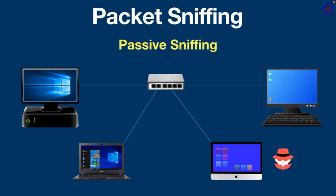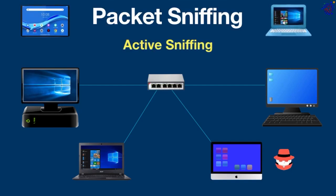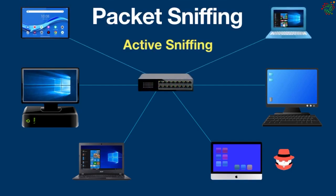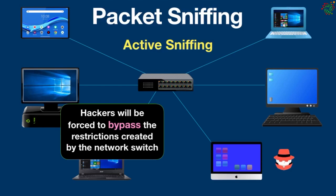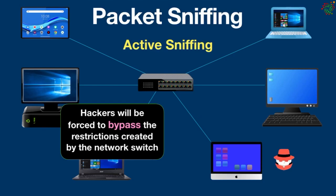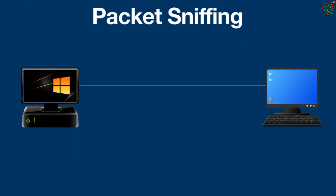This type of packet sniffing can be very difficult to detect. Active sniffing, on the other hand, is used in large networks where switches are used. Because switches direct traffic only to specific devices, passive sniffing won't provide access to all network traffic. In such cases, hackers are forced to bypass the restrictions created by the network switch, which requires active sniffing — and this adds further traffic to the network, making it detectable to network security tools.